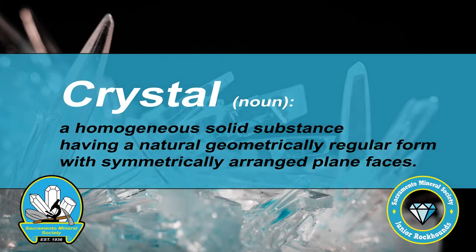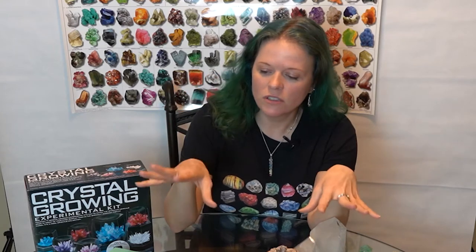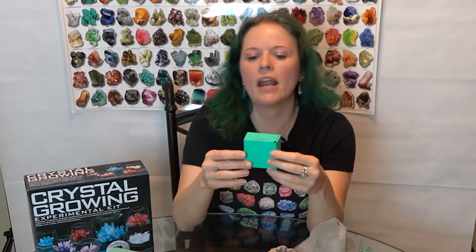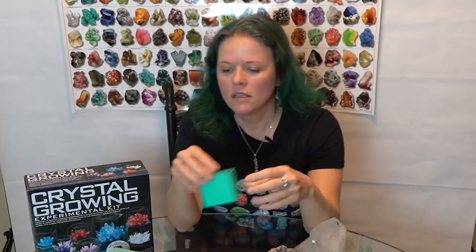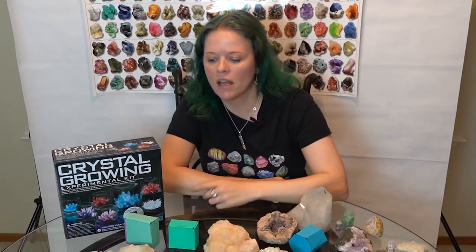So to start off, what is a crystal? A crystal is a pure form of a mineral which arranges itself in a symmetrical and ordered fashion, and there are several different structures that a crystal normally takes — there are six families in fact.